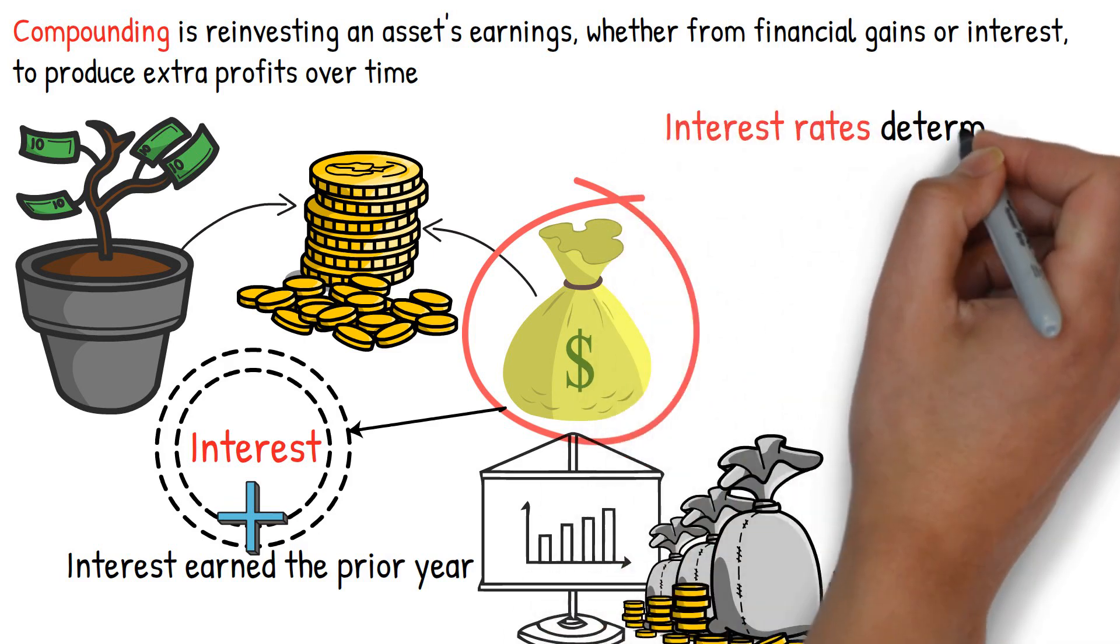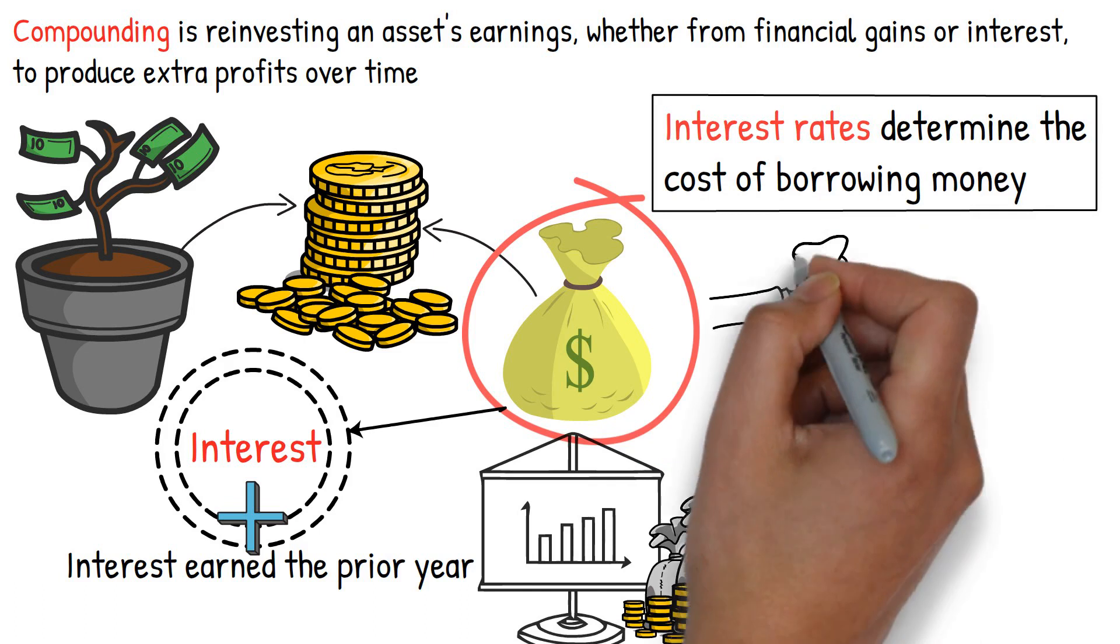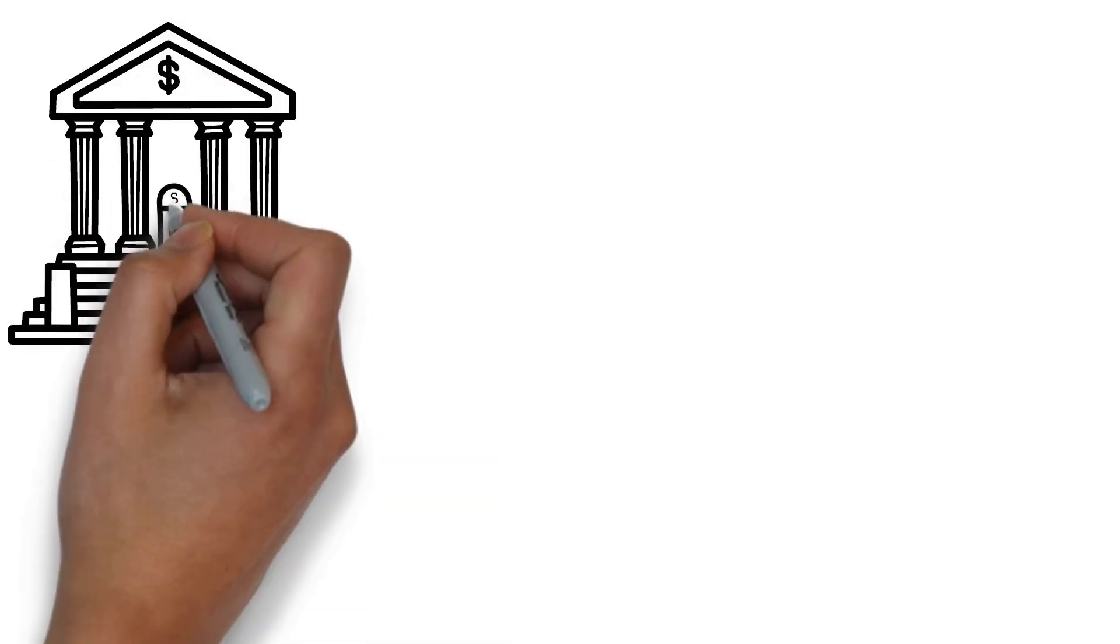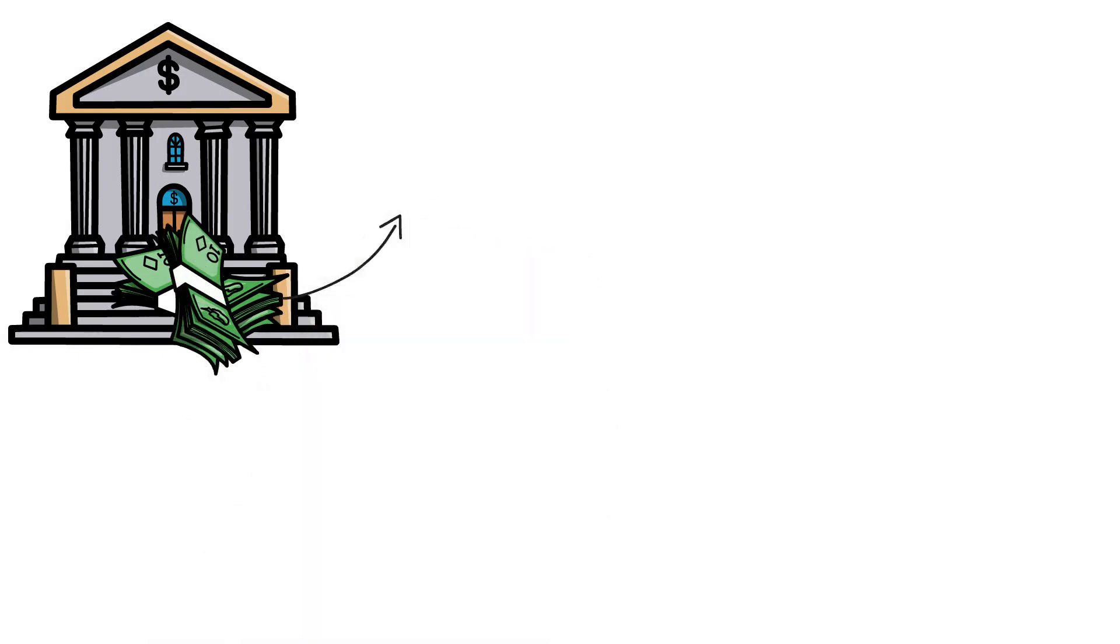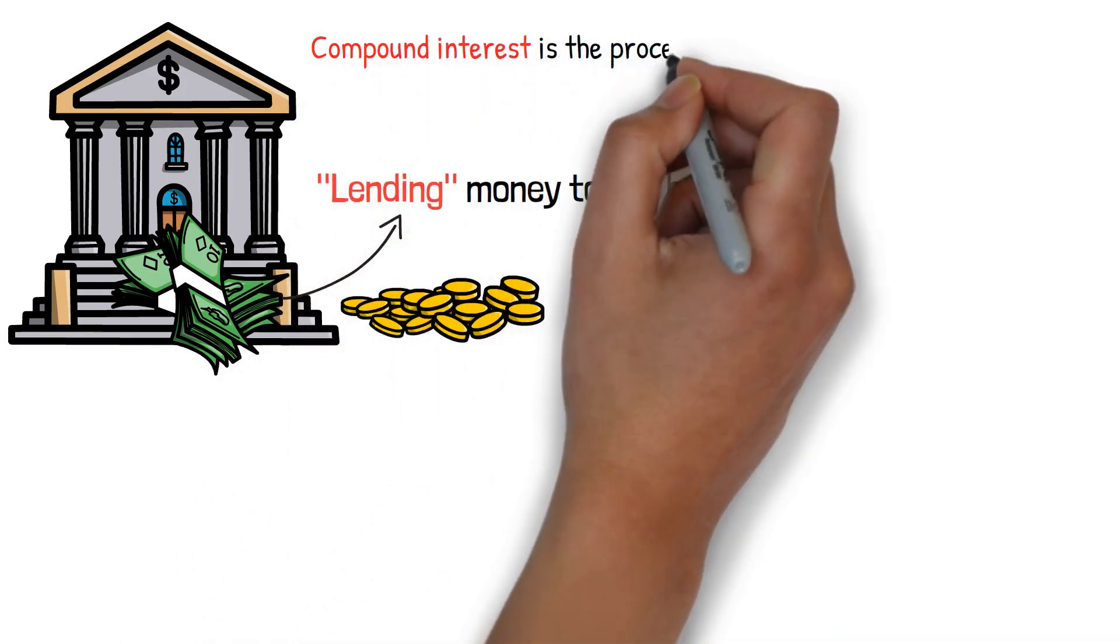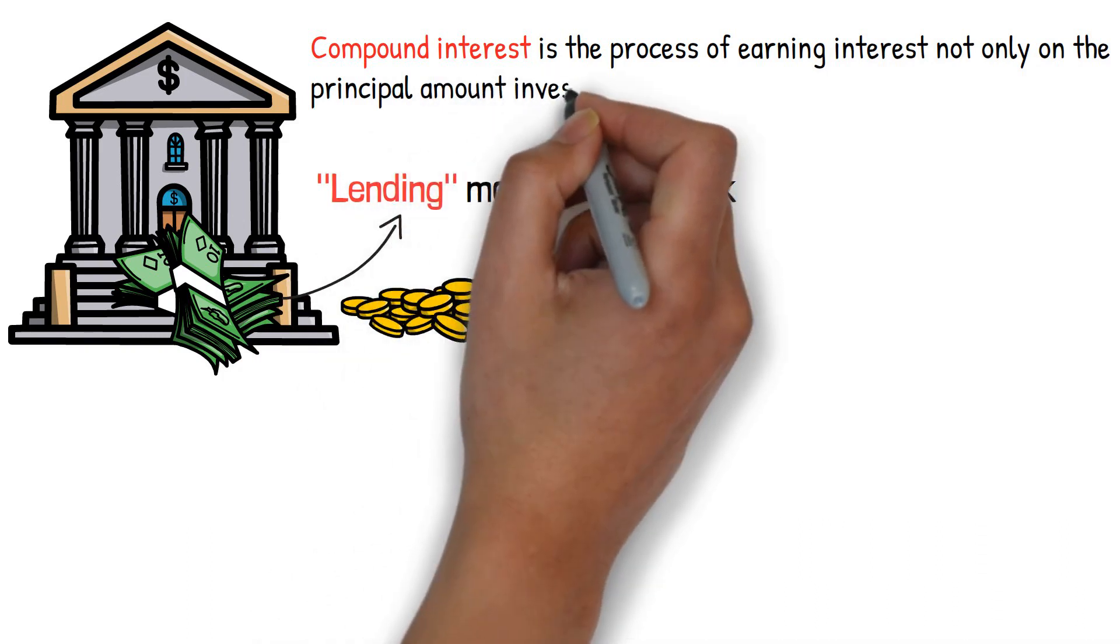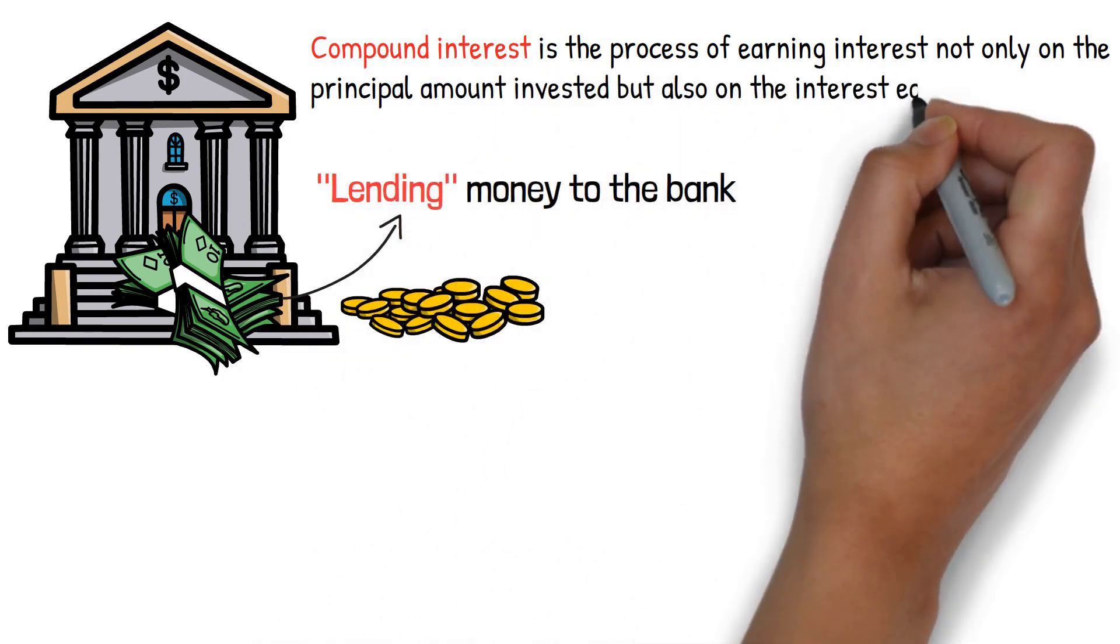Interest rates determine the cost of borrowing money. You receive interest if you are the participant who lends the money. When you deposit money in your bank account, you are effectively lending money to the bank, and you will earn interest on the amounts you deposit. Ultimately, compound interest is the process of earning interest not only on the principal amount invested, but also on the interest earned over time.